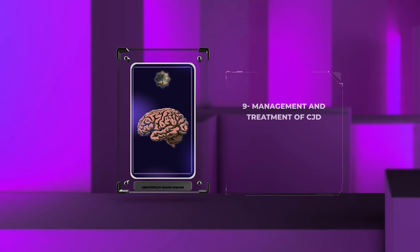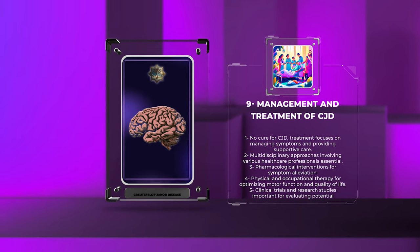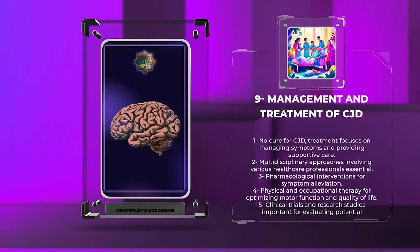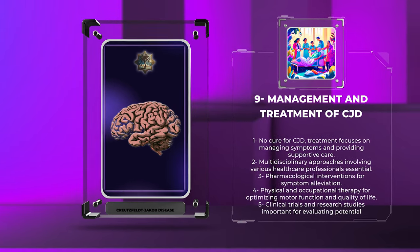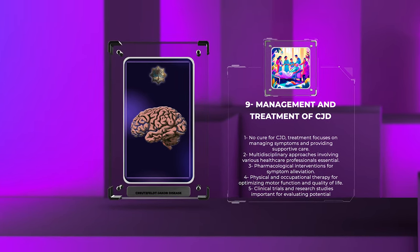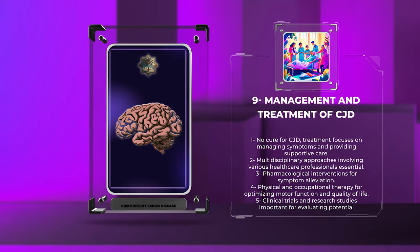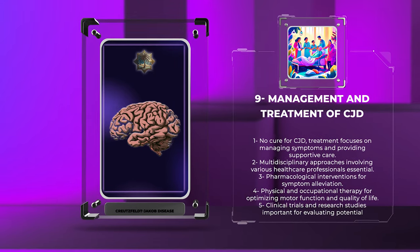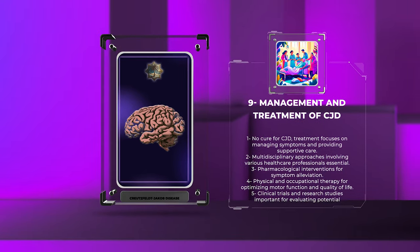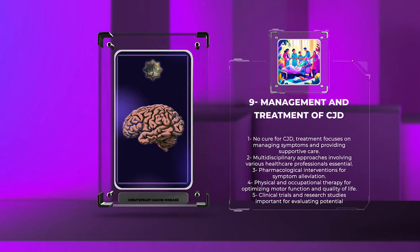Currently, there is no cure for CJD, and treatment focuses on managing symptoms and providing supportive care. Multidisciplinary approaches involving neurologists, palliative care physicians, psychologists, and other healthcare professionals are essential for addressing the complex needs of CJD patients. Pharmacological interventions aim to alleviate symptoms such as myoclonus, psychiatric disturbances, and sleep disturbances. Physical and occupational therapy may help optimize motor function and maintain quality of life. Voluntary participation in clinical trials and research studies is crucial for evaluating potential therapeutic interventions and advancing our understanding of the disease.